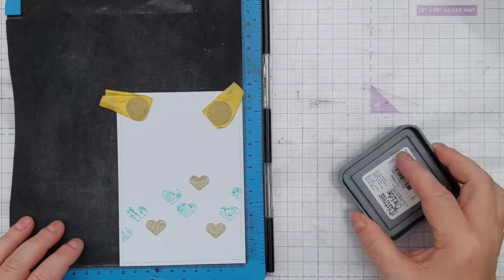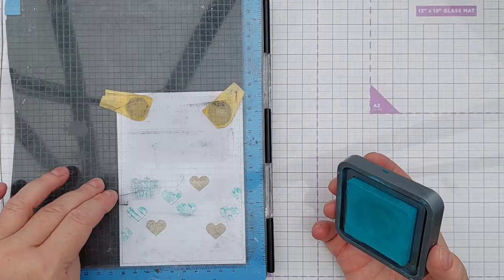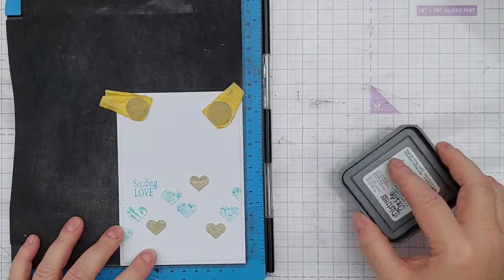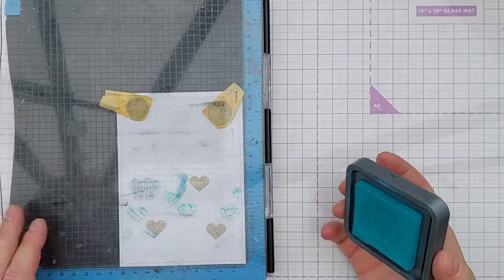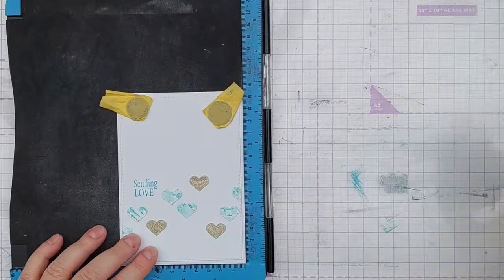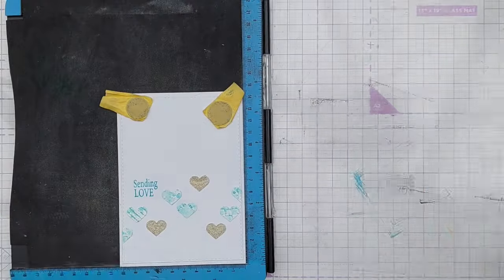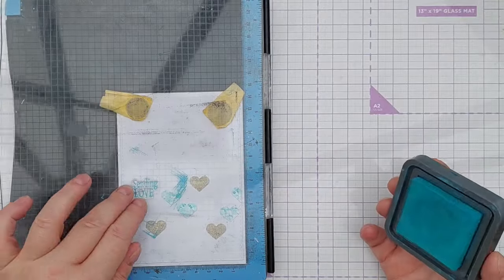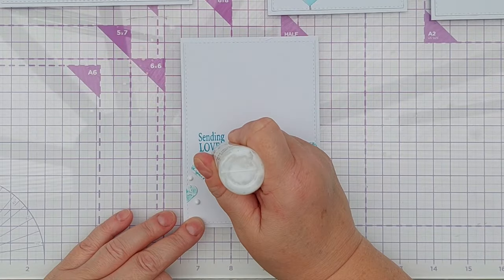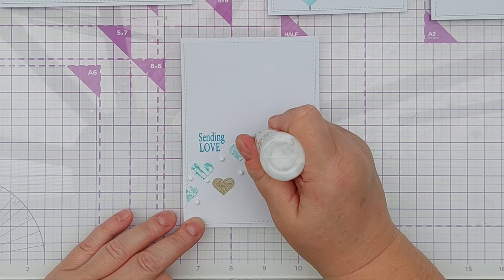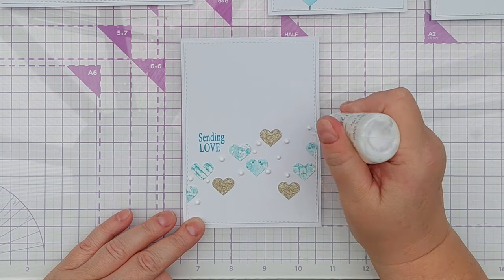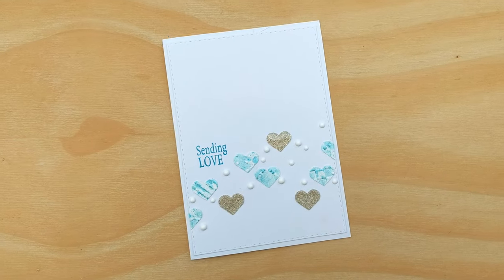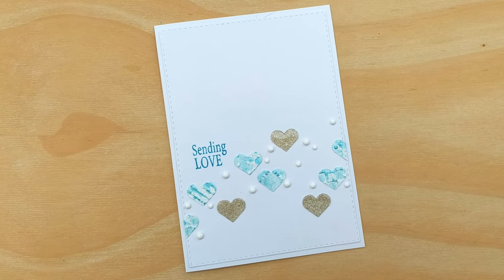For a sentiment I stamped the words Sending Love in Broken China Distress Oxide because that went well with the shimmery bluey greeny hearts. The stamp though is made of silicone which is naturally water resistant and distress oxides are water-based inks so I did have to stamp it quite a few times to get a solid impression but I got there in the end. As a finishing touch I dotted around some white Nouveau drops. I think this worked well as it added a sense of movement to the card.